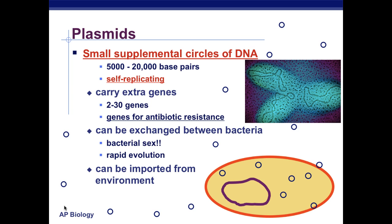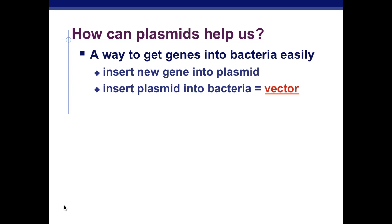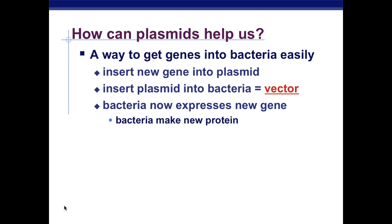Plasmids can be imported from the environment, so bacteria can easily adapt to their environment. So how can plasmids help us? It's a way to get genes into bacteria easily. You can insert new genes into a plasmid, and inserting a plasmid into bacteria is called a vector. The bacteria then expresses the new gene and makes the new protein.